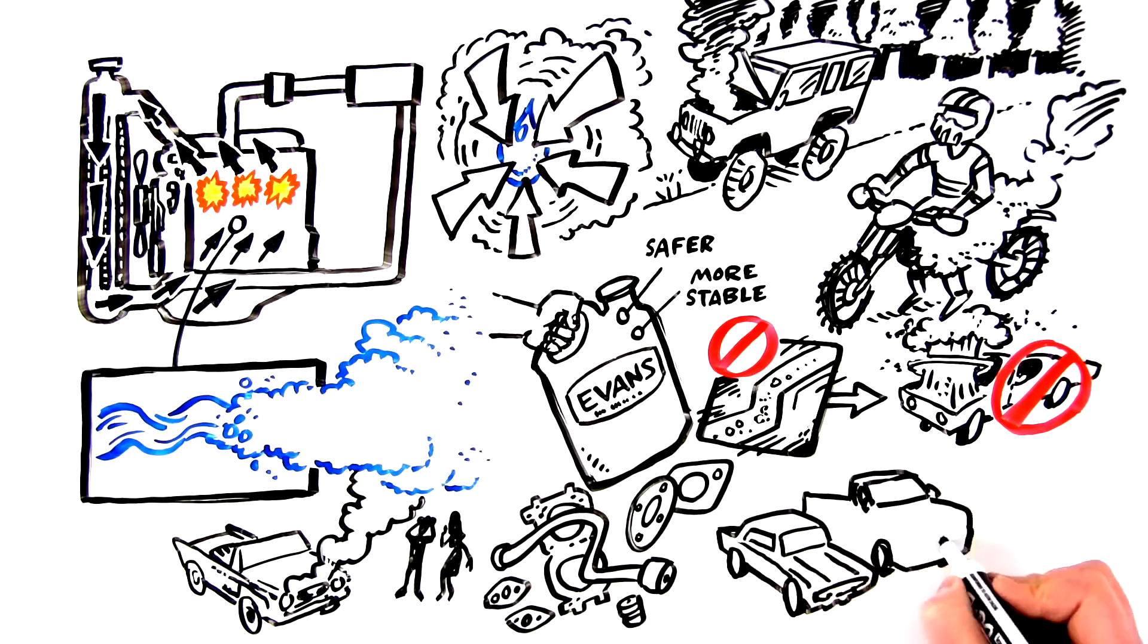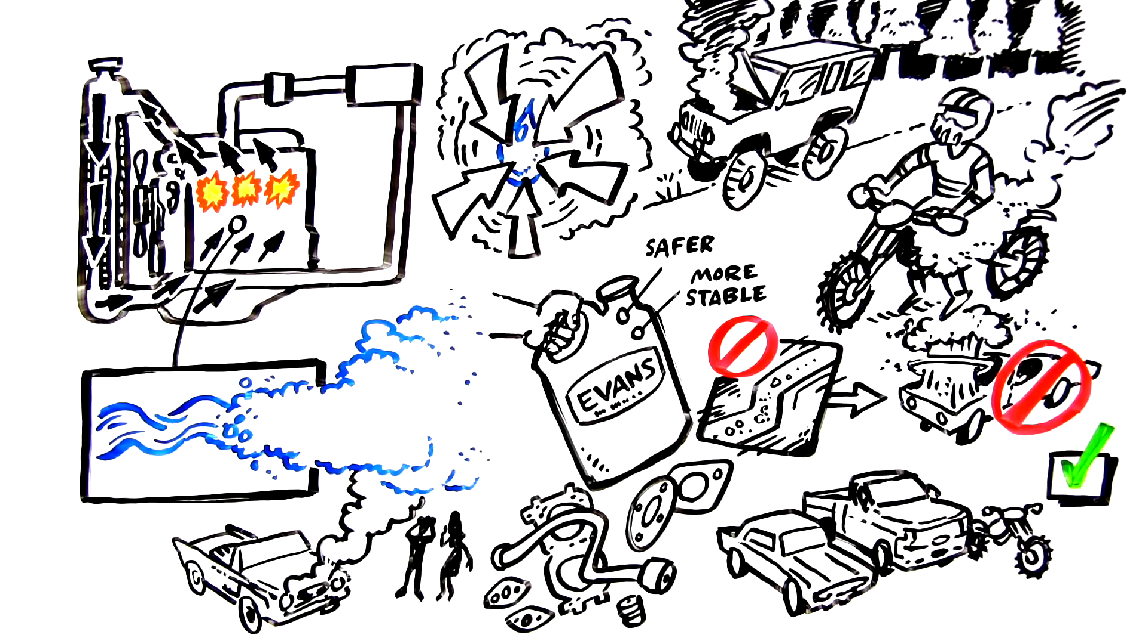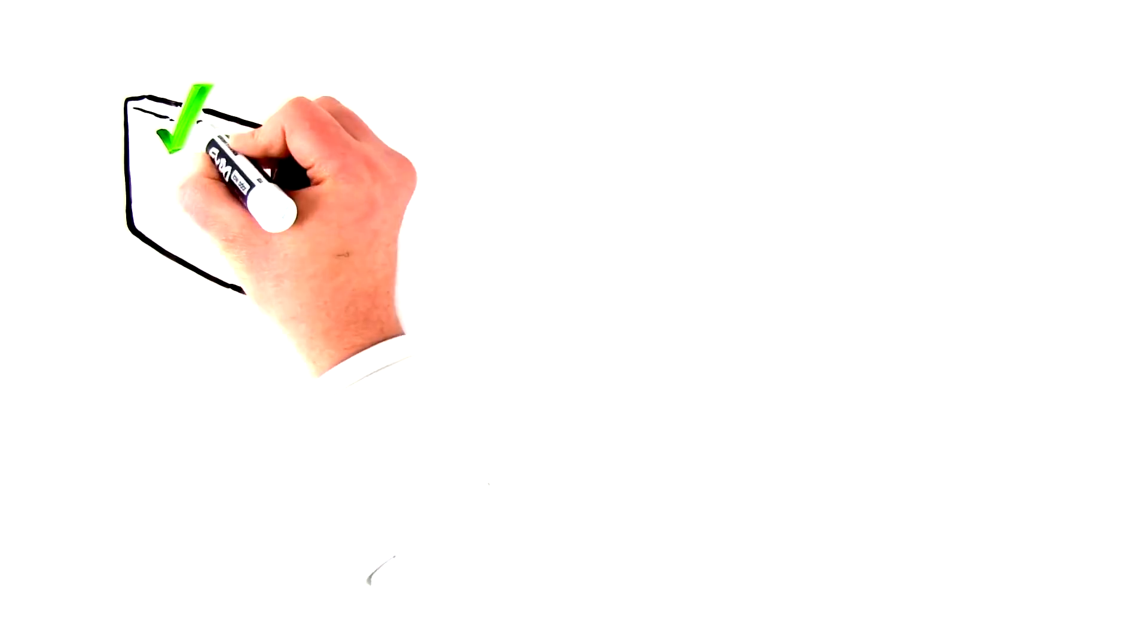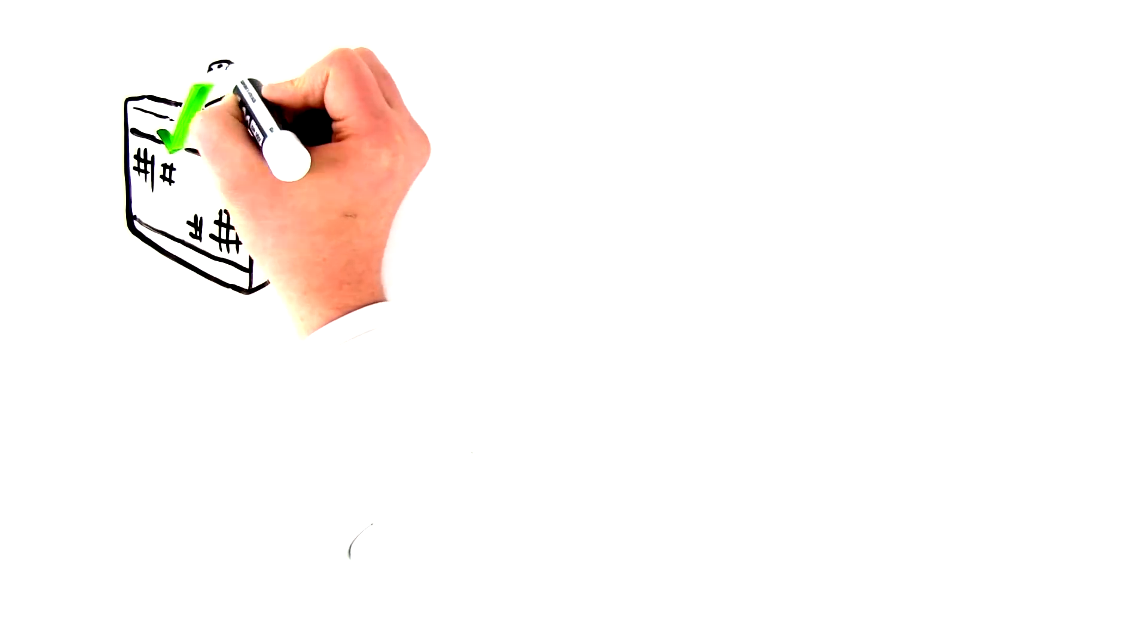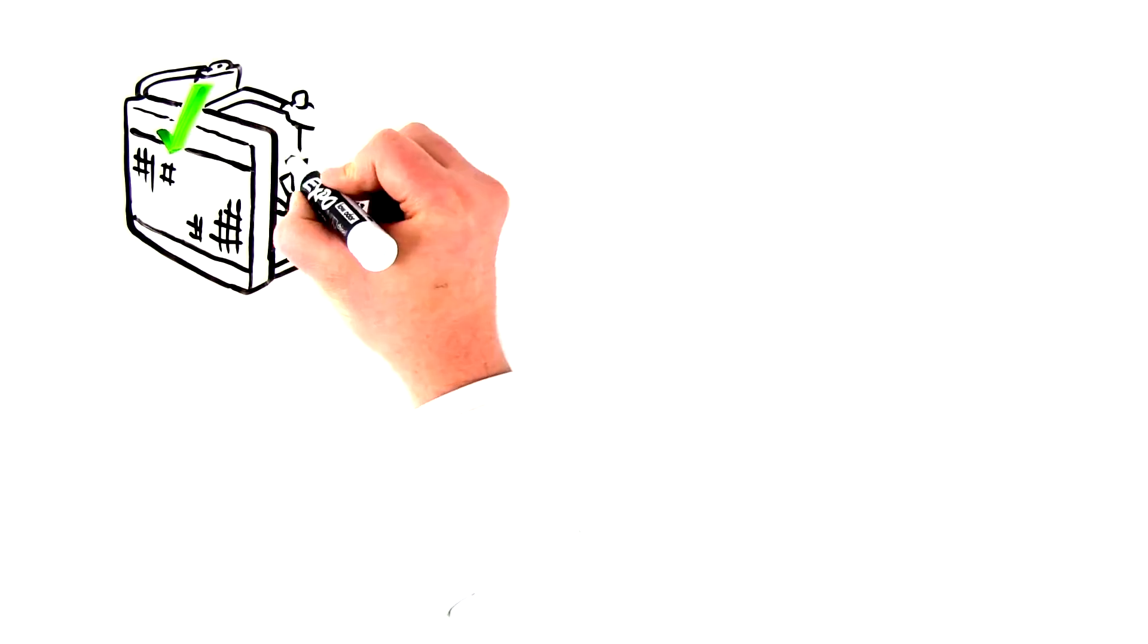From cars to trucks to motorcycles, Evans is an enabler. It allows safe, consistent, and efficient operation in temperature ranges that are simply unreachable with water.